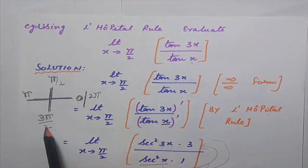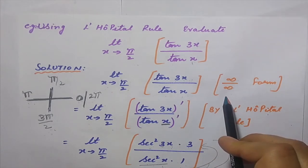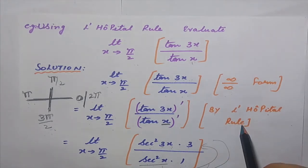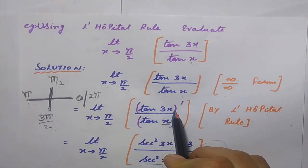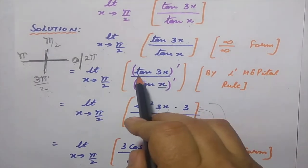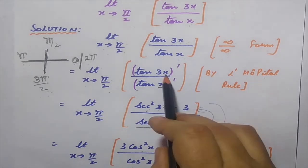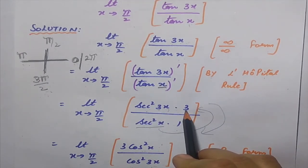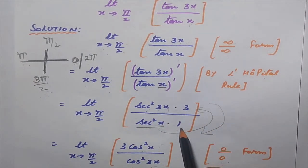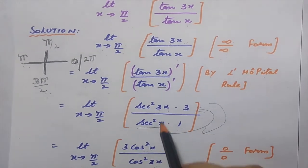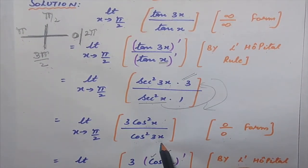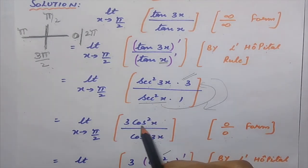Since it is infinity by infinity, we solve it using L'Hôpital's rule — differentiating both numerator and denominator. The differentiation of tan(3x) gives sec²(3x) · 3 in the numerator, and the differentiation of tan(x) gives sec²(x) in the denominator. Converting: the numerator becomes 3/cos²(3x) and the denominator becomes 1/cos²(x), which moves cos²(x) to the numerator.